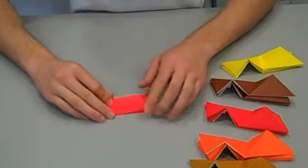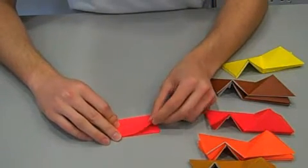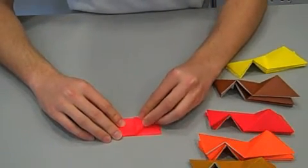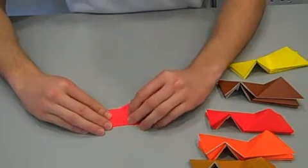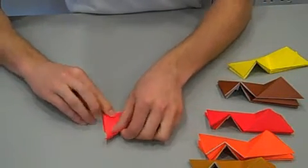Now, for the tricky part. Take the top corner. Fold it down. Then, fold it back up. Making a triangle.